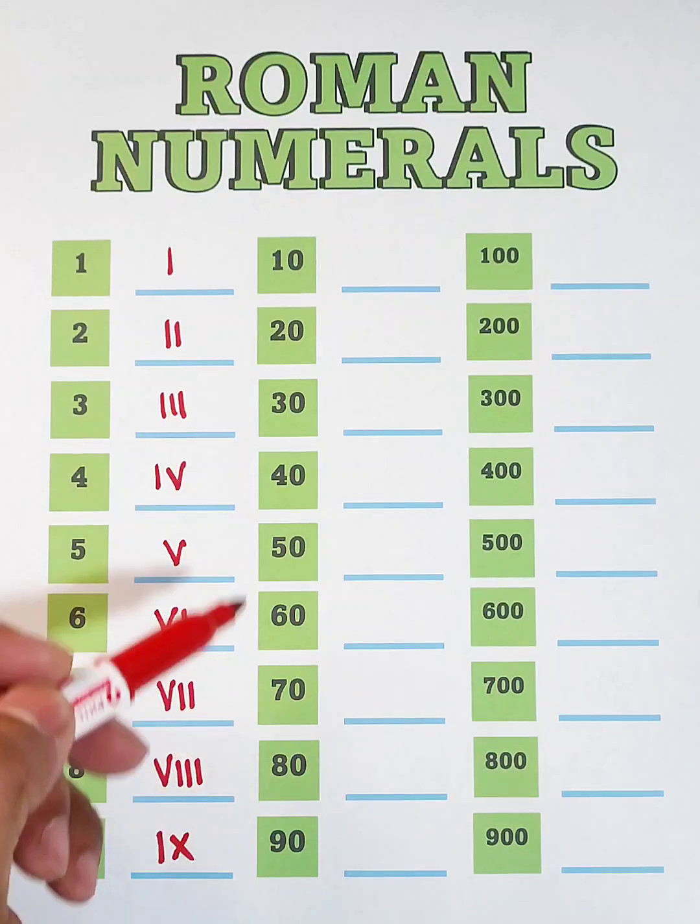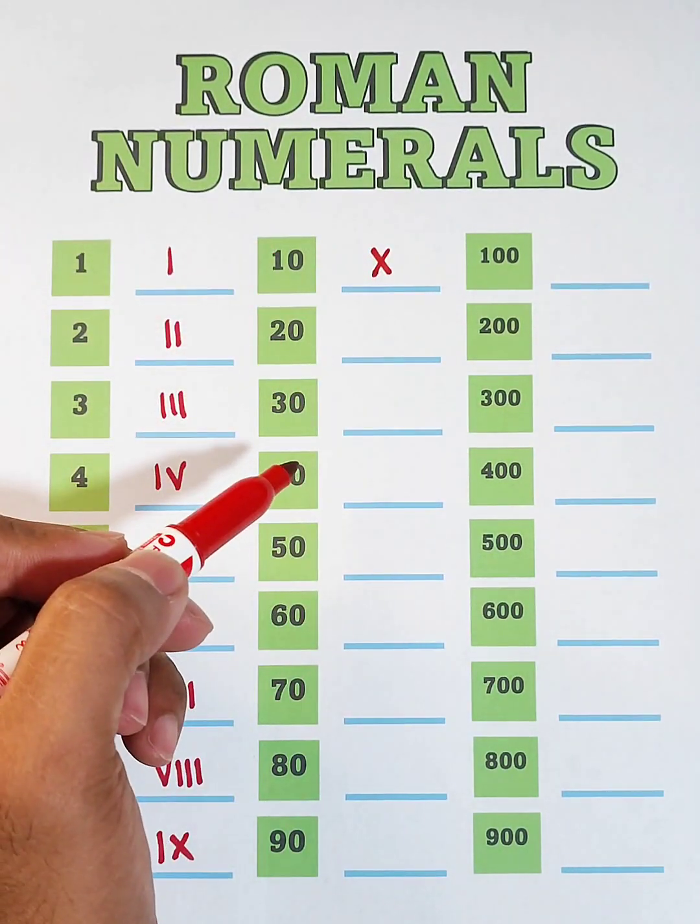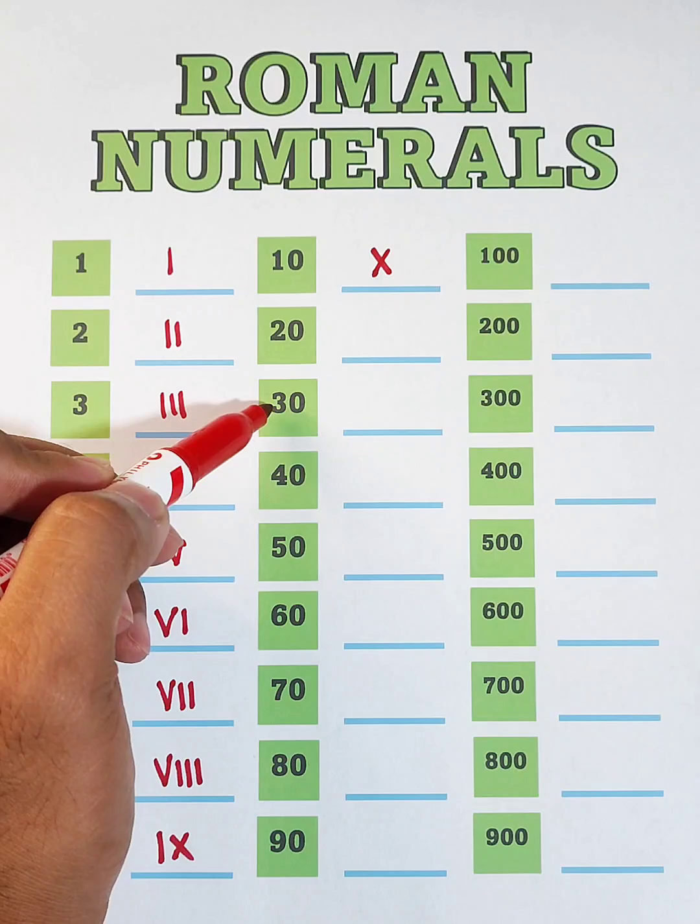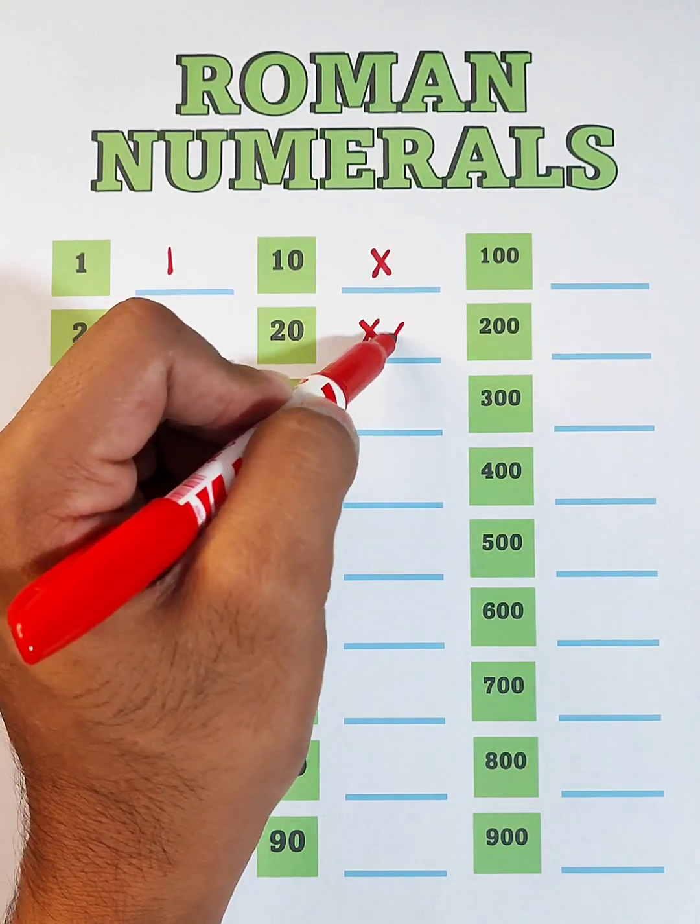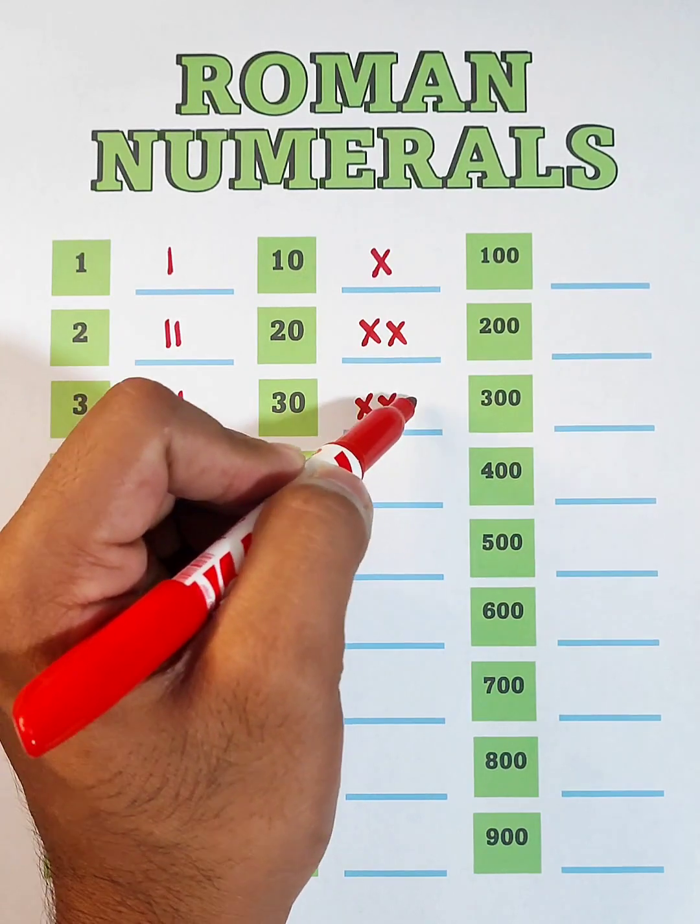Let's go with the second column. This 10 is represented by X. Now, we have 20 and 30. For 20, we will use X and X. For 30, that would be X, X, and X.